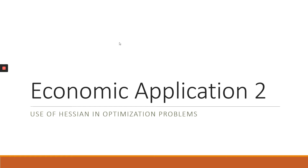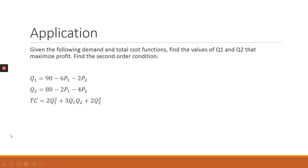This is an application of the use of calculus in optimization problems. The question gives us a demand function and a total cost function, and we need to find values of q1 and q2 that maximize profits. The second part requires us to find the second order condition to confirm whether profits are truly maximized or minimized.